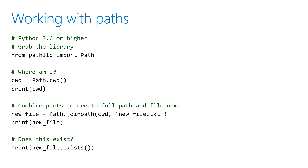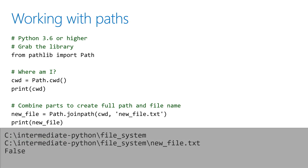Another great feature is checking whether a file exists using a Boolean variable. When you run it, you'll see your current working directory, the full path name with the directory and file name, and in this case since I haven't actually created a file called new file, when I ask does that file exist, even though I've created a file path for it, the file itself is not there, so it returns false.